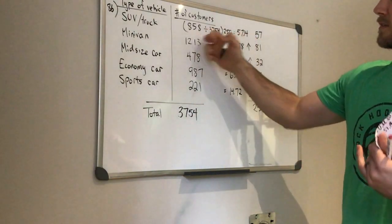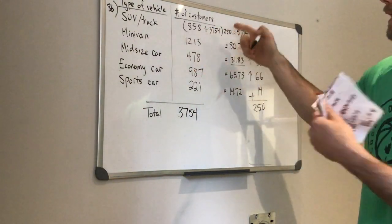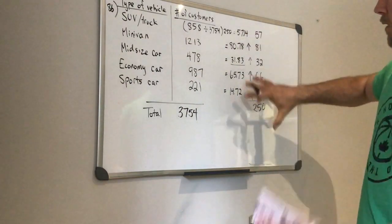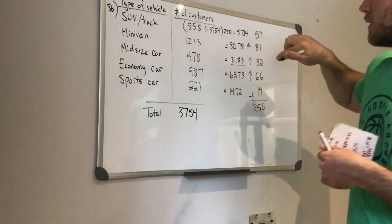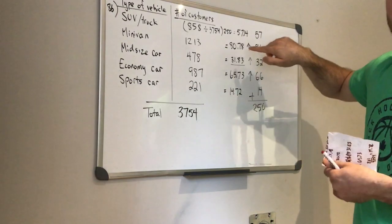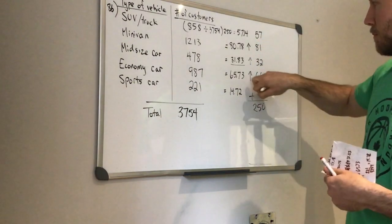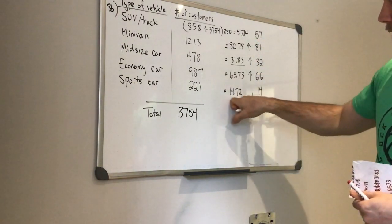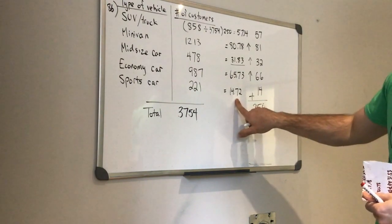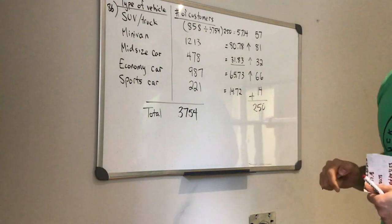Okay, so find the percentage, multiply that by the number of surveys, and then round accordingly. So you will notice that I kept a couple decimal places, make the decisions at the end, because you are not always rounding up. You can see this one, the sports car, even though it is 0.72, it did not end up getting rounded up.